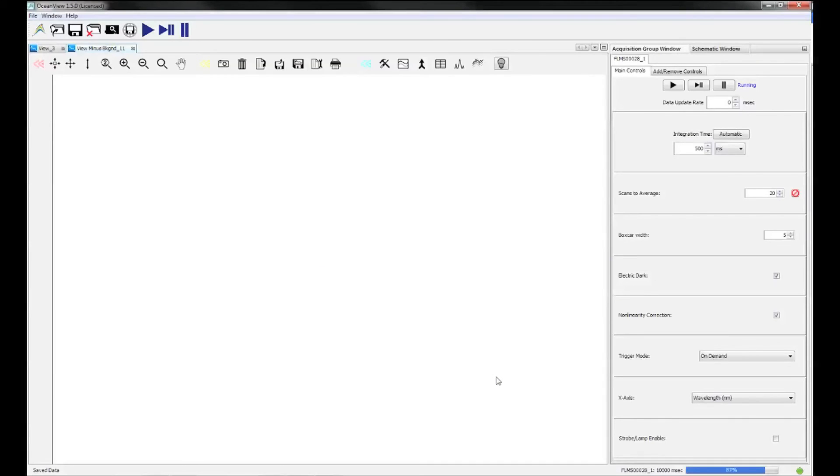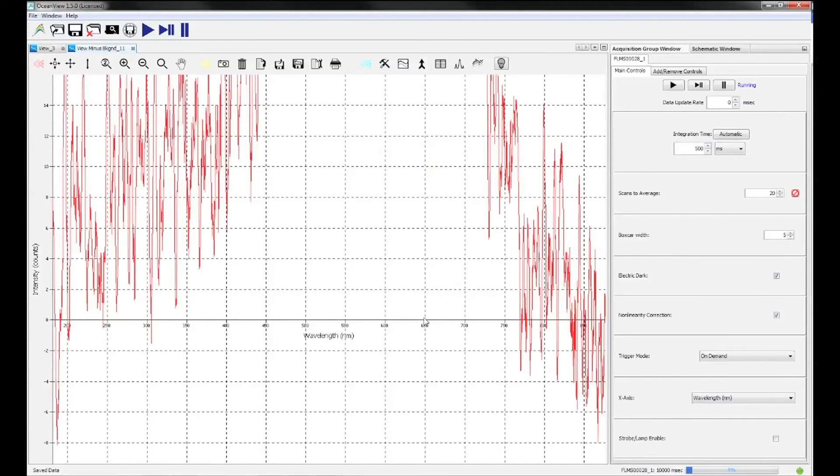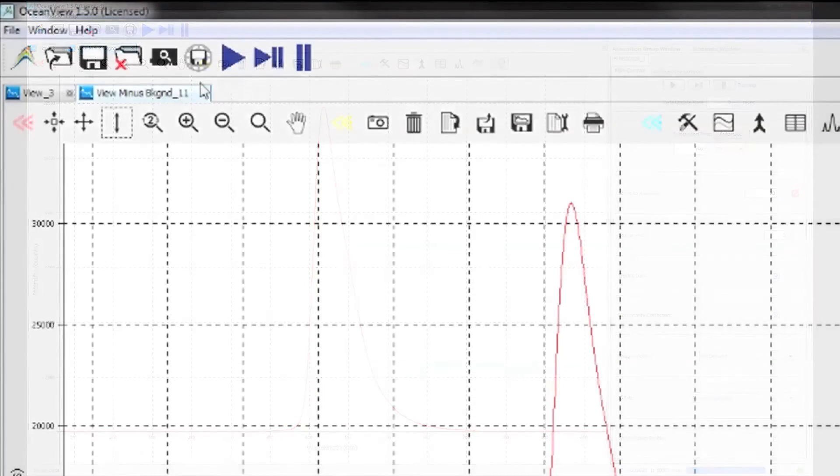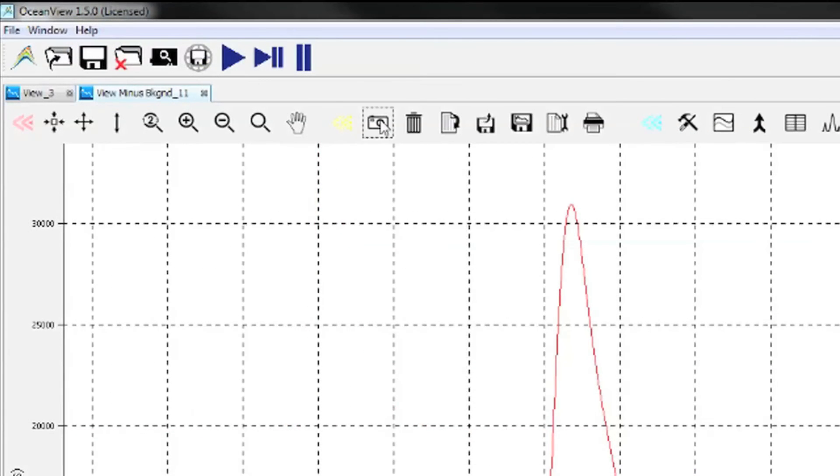Switching your light source back on, your fluorescence measurement can now be seen in the view minus background tab. You can capture the current spectrum using the camera icon at the top of the screen.